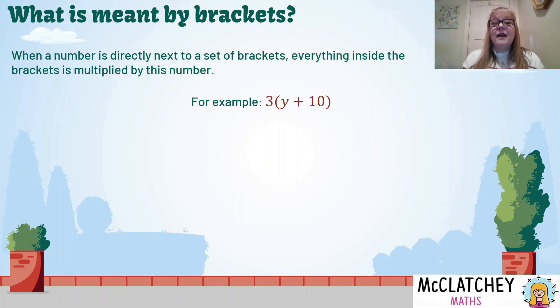What that means is that the number 3 that's on the outside gets multiplied by everything inside the brackets. In fact we have this invisible multiplication symbol sitting between the 3 and that first bracket, so that means we're going to actually be multiplying the 3 by the y first and then the 3 by the 10.